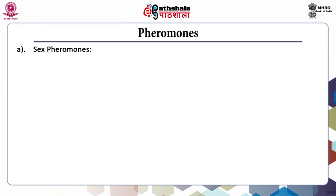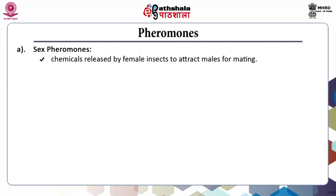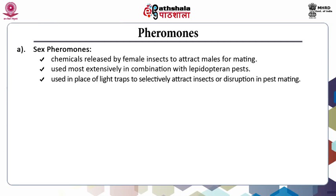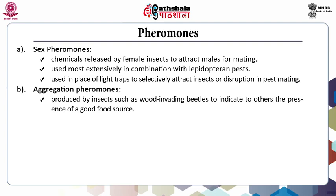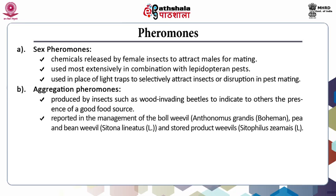Sex pheromones are chemicals released by female insects to attract males for mating and are used most extensively in combination with Lepidopteran pests. They are used in place of light traps to selectively attract insects or cause disruption in pest mating. Aggregation pheromones are produced by insects such as wood-invading beetles to indicate the presence of a good food source. They are reported in the management of the boll weevil (Anthonomus grandis), pea and seed weevils Sitona lineatus, and stored product weevils Sitophilus spp.